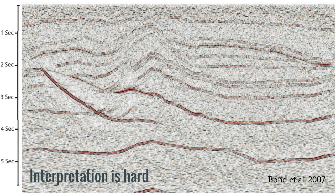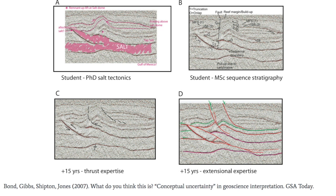Look at an image like this. You can see that there are hundreds of ways to interpret it. Claire Bond and some others did a really cool experiment, probably about 10 years ago, where they gave that image — which has actually come from a model, so they know what the answer is — to lots of different interpreters and found that the responses were highly dependent on the interpreter's background. Very idiosyncratic, subjective interpretations.